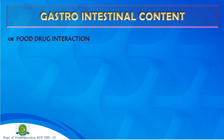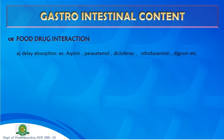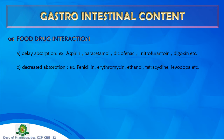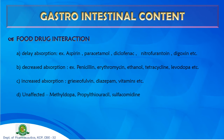Gastrointestinal contents include four categories. The first is food-drug interaction. Some drugs show delayed absorption with food: aspirin, paracetamol, diclofenac, nitrofurantoin, and digoxin. Some show decreased absorption with food: penicillin, erythromycin, ethanol, tetracycline, and levodopa. Increased absorption with food is seen for griseofulvin, diazepam, and some vitamins. No interaction is observed for methyldopa, propylthiouracil, and sulfacomidine.